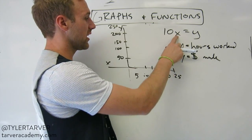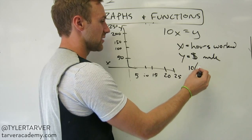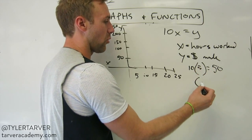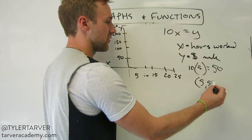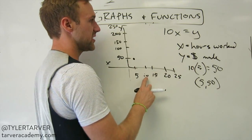So, if we put in 5, that's our input. So we're putting that X into that problem. So we go 10 times 5. 10 times 5 is 50. So our ordered pair is 5 for the X, 50 for the Y. So 5, 50, we make a point.